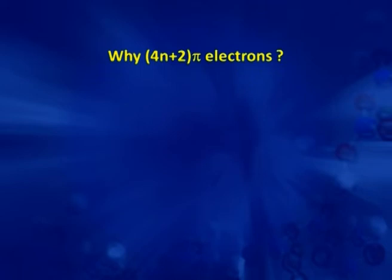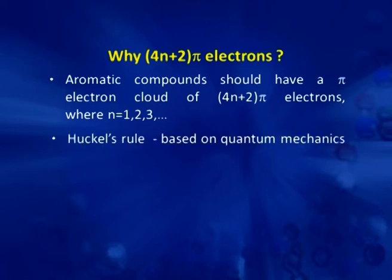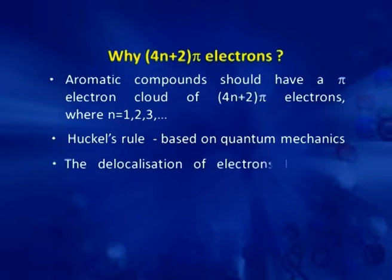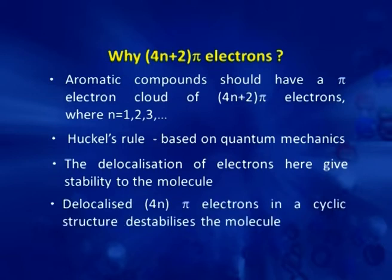Now we see why there is a need of 4n+2 pi electrons for a compound to be aromatic. This requirement is known as Hückel's rule, which is based on quantum mechanics. The delocalization of 4n+2 pi electrons gives stability to the molecule. Further, it was found that if there is a delocalization of 4n pi electrons in a cyclic structure, that destabilizes the molecule. So 4n+2 stabilizes, while 4n pi electrons destabilize, and these types of molecules are known as anti-aromatic compounds.